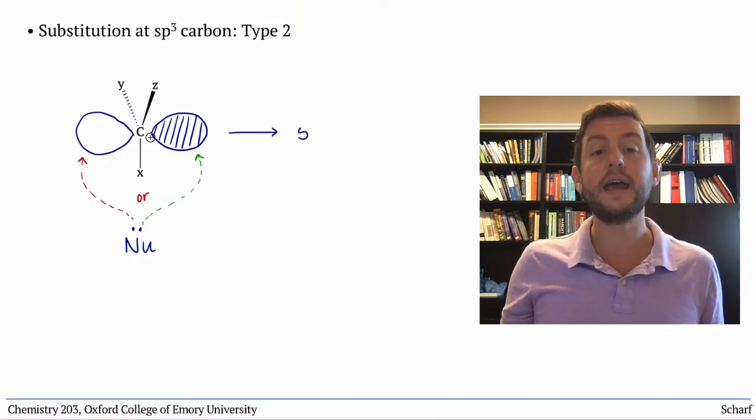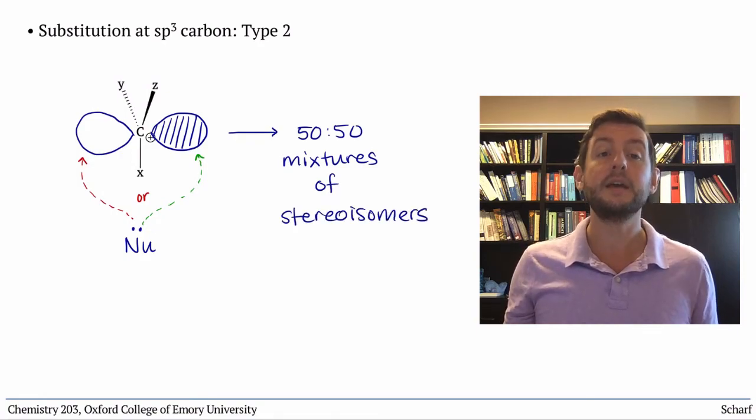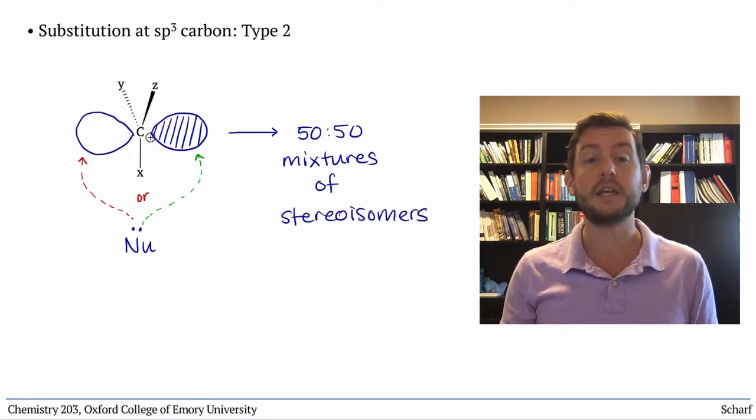The result is that SN1 reactions produce 50-50 mixtures of stereoisomers if the carbon where the reaction is taking place is a stereocenter.